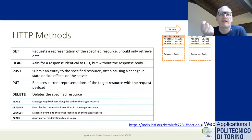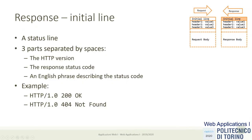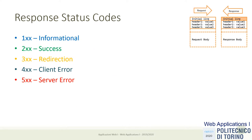Concerning the response, the first line has three fields: the protocol version the server is responding on, and a status code plus an English phrase that describes it. For example, the status code 200 and the message 'OK' carry exactly the same information — one in numerical format and one in text. Status codes are grouped into five big categories, all being three-digit codes.